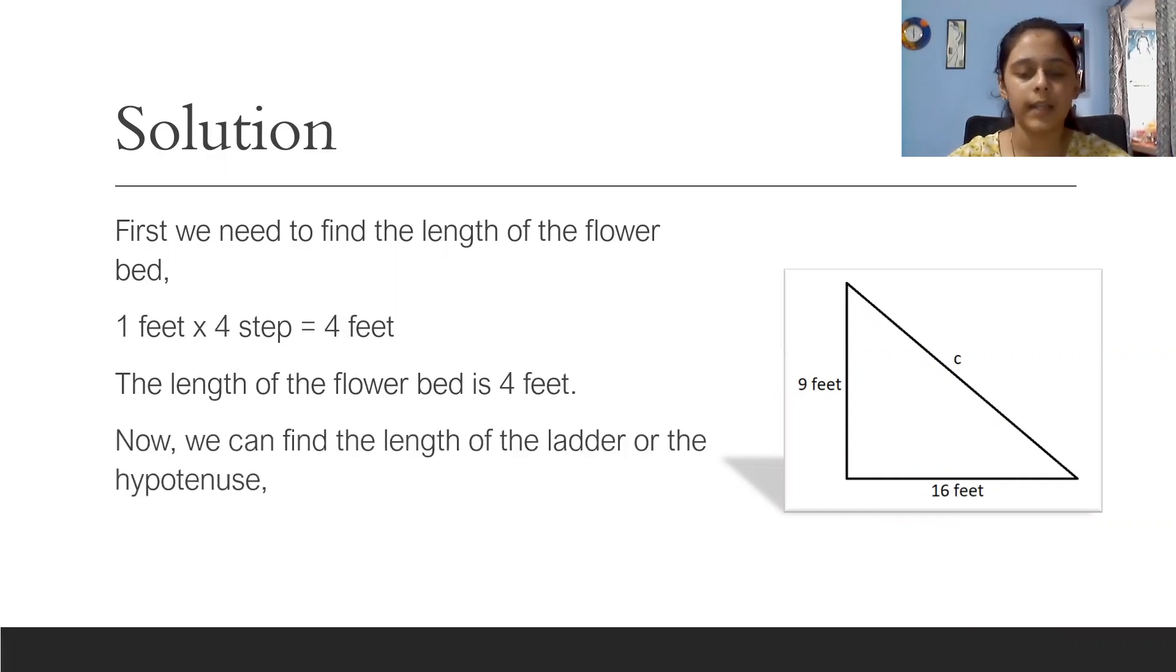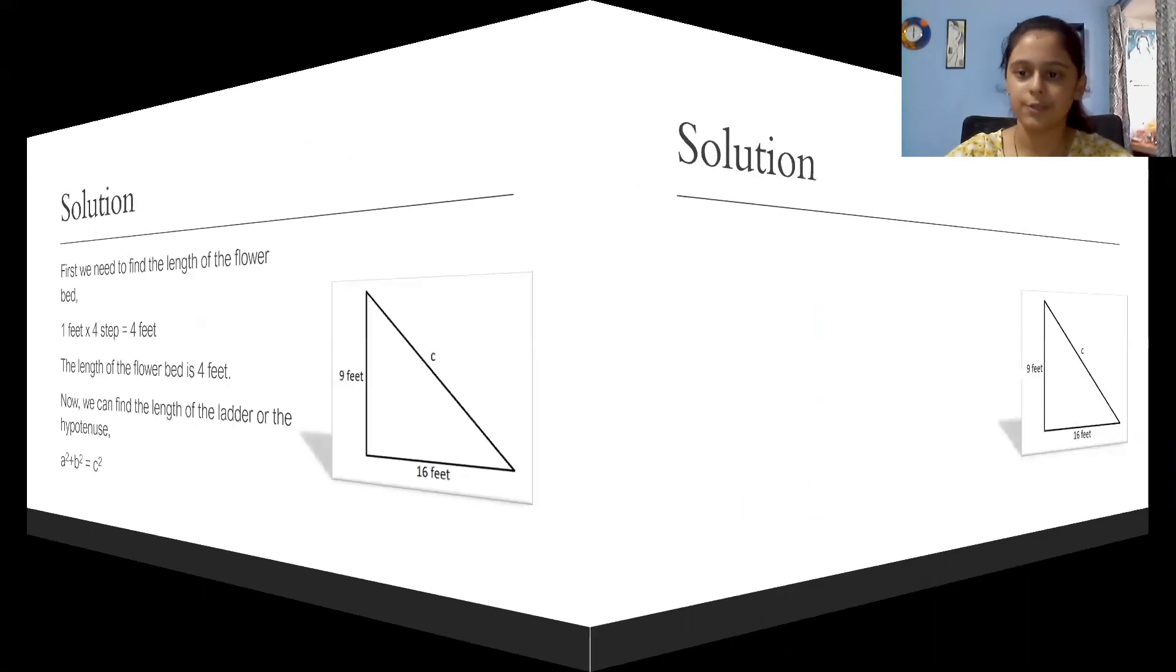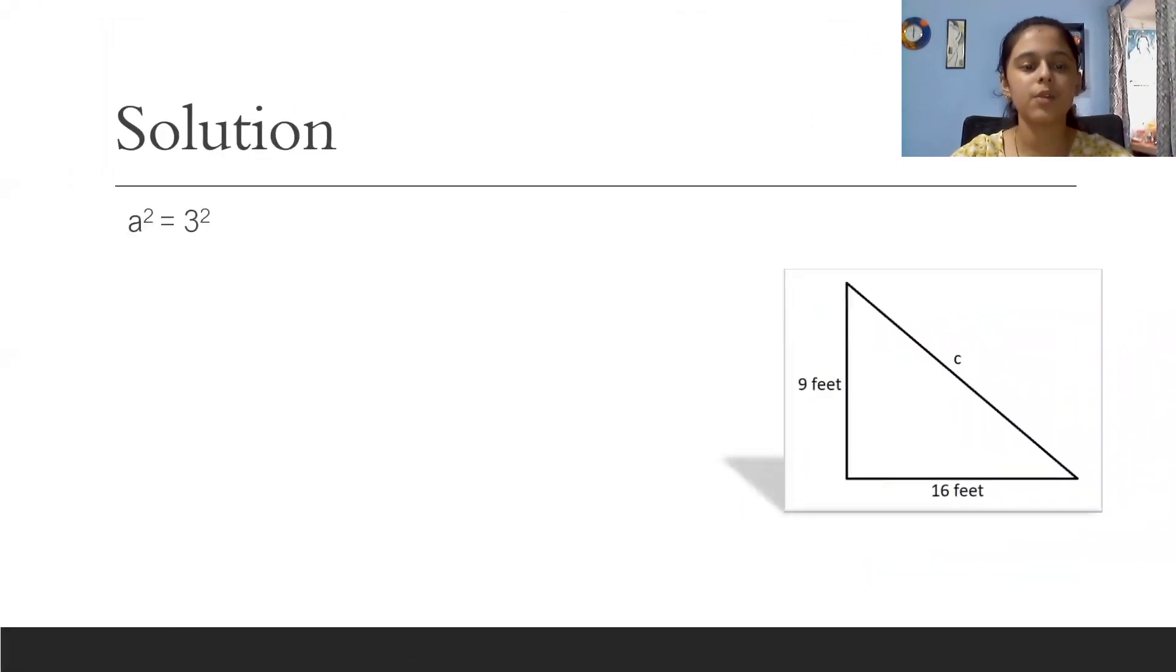Now we can find the length of the ladder or the hypotenuse which is a square plus b square equals c square. A square equals three square. B square equals four square.